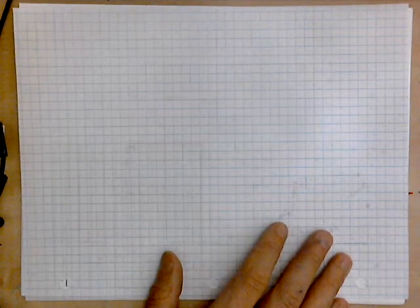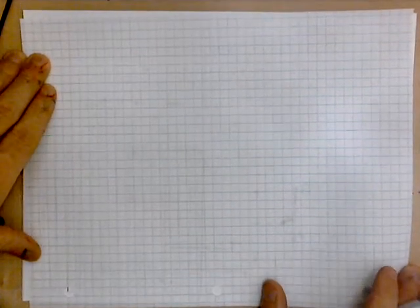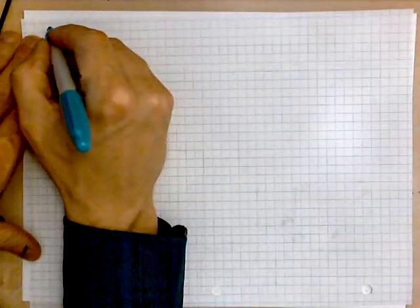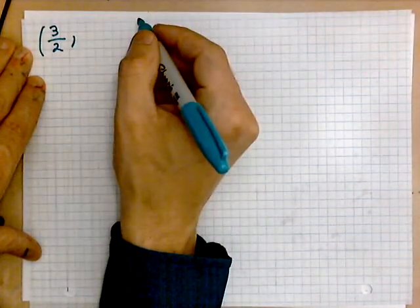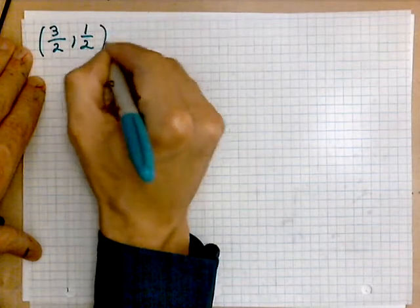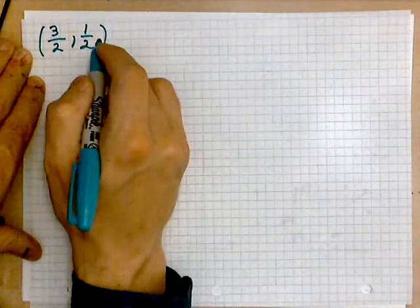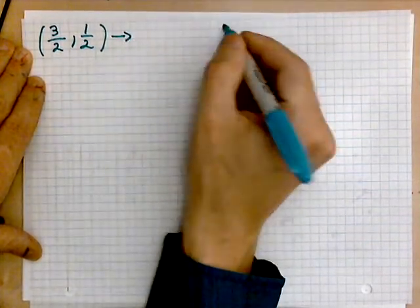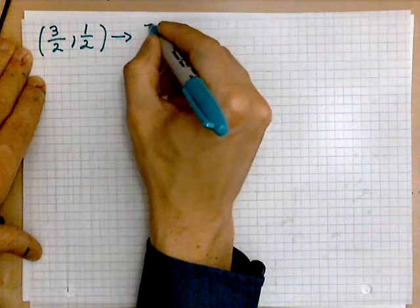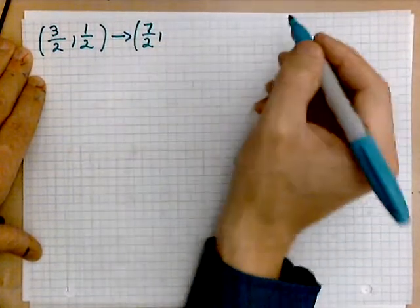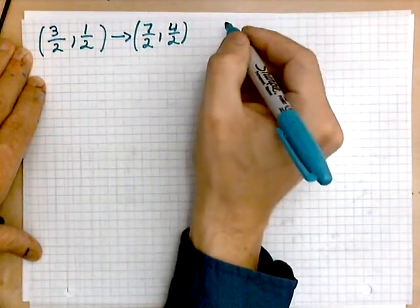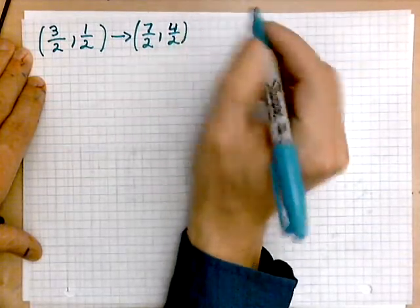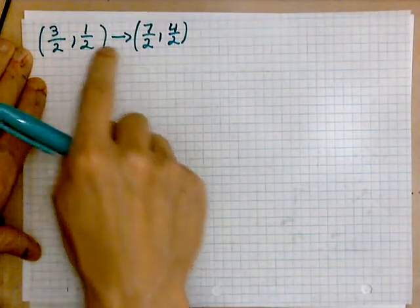Let's take a look at what we have here. Say you are given the initial and terminal points that look like this. Three halves and one half — this will be our initial point. And let's say this takes us to the point seven halves and then four halves, which of course is really just the number two. But it's more convenient if we keep everything in terms of halves.